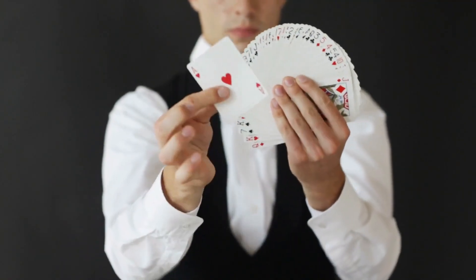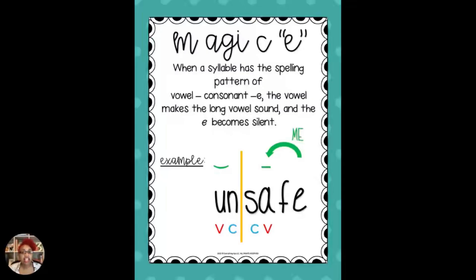Magic E, or vowel-consonant-E, simply means a vowel has a spelling pattern of vowel-consonant-E, and the vowel will then make its long vowel sound or say its name, and the E becomes silent. So in the example 'unsafe,' that A now makes the long vowel sound saying its name — the 'a' sound — and the E is silent: unsafe.